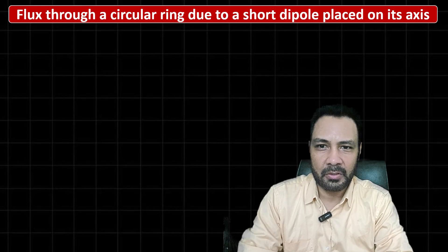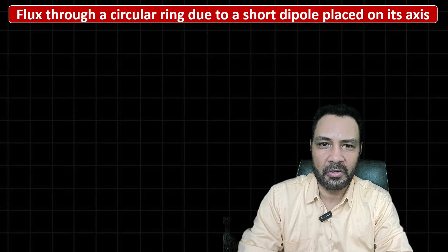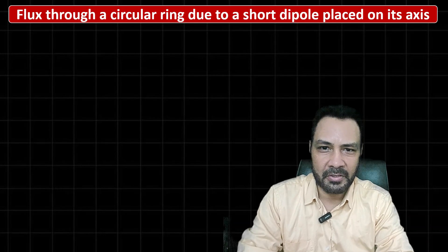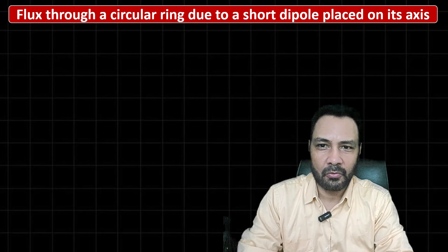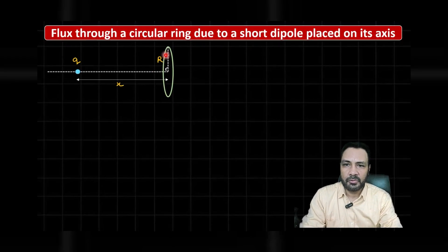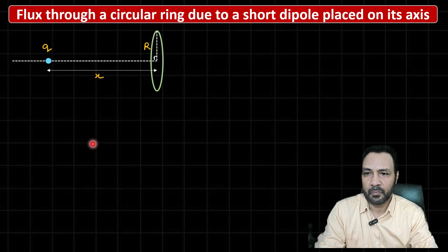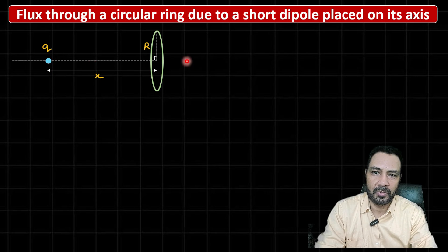So I will use a simple technique: I will use the result of the flux due to a point charge through the ring and then displace that point charge a little. So let us try to find this calculation. This is a ring of radius r, and at a distance x from the center along the axis, a point charge q is placed. I want to find the flux due to this point charge through the ring.